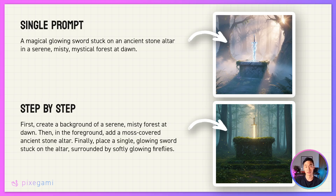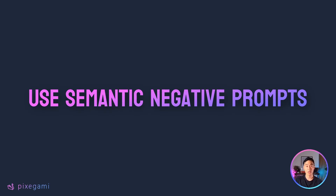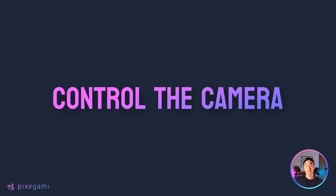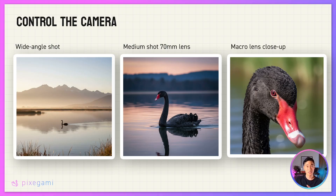The fifth technique is called semantic negative prompts. Instead of saying something like 'no cars,' you describe the scene positively — for example, 'an empty, deserted street with no signs of traffic.' I didn't run tests for this one, but it should be helpful especially if you're struggling with removing certain elements from your image. The sixth and final technique is about using photographic terminology to control the composition: you can specify wide angle shot for landscape scenes, medium shot with a 70mm lens for portraits, or macro lens for detailed close-ups. You can see the same subject — a black swan — shot with different camera settings, and it has a huge effect on the type of image and effect you get.